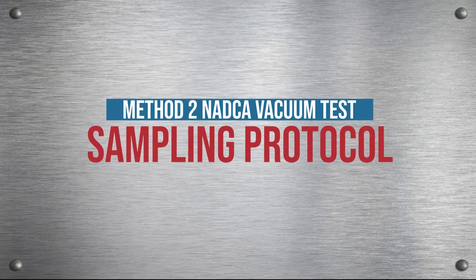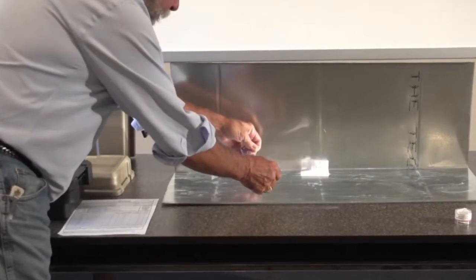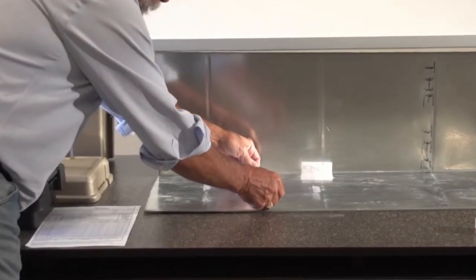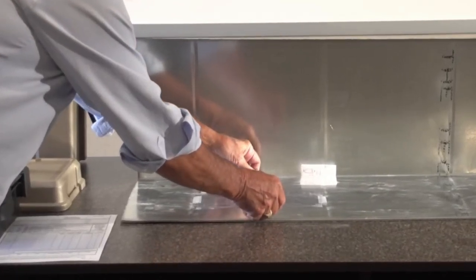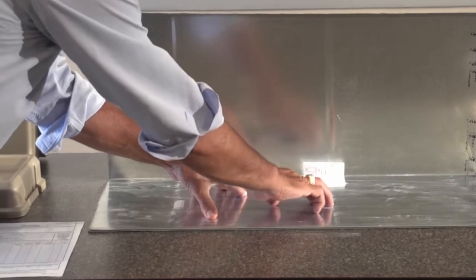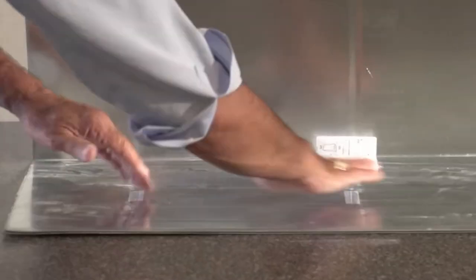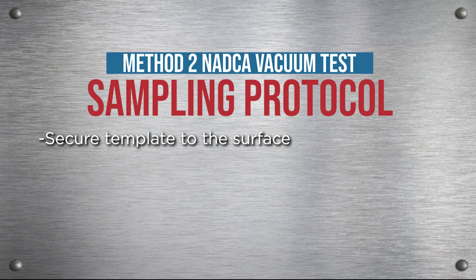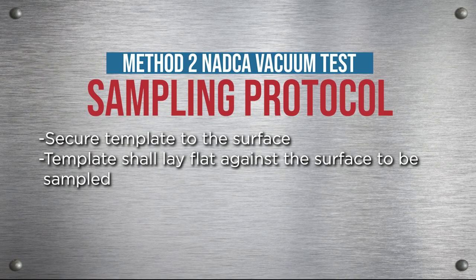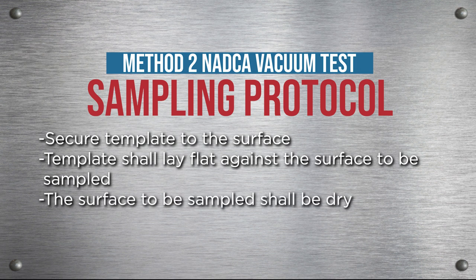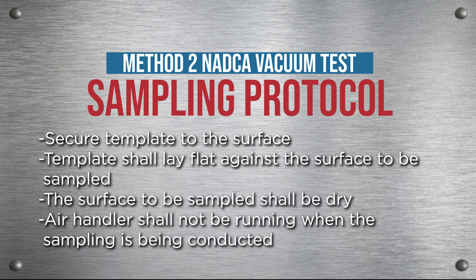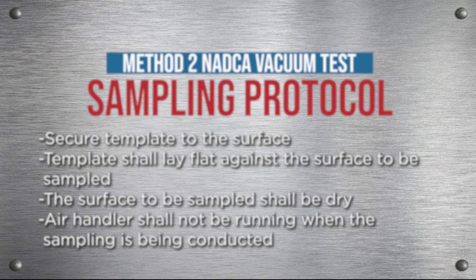Sampling protocol: secure the template to the surface to be sampled so that it will not shift position during sample collection. The template shall lay flat against the surface to be sampled. The surface to be sampled shall be dry. The air handler shall not be running when the sampling is being conducted.